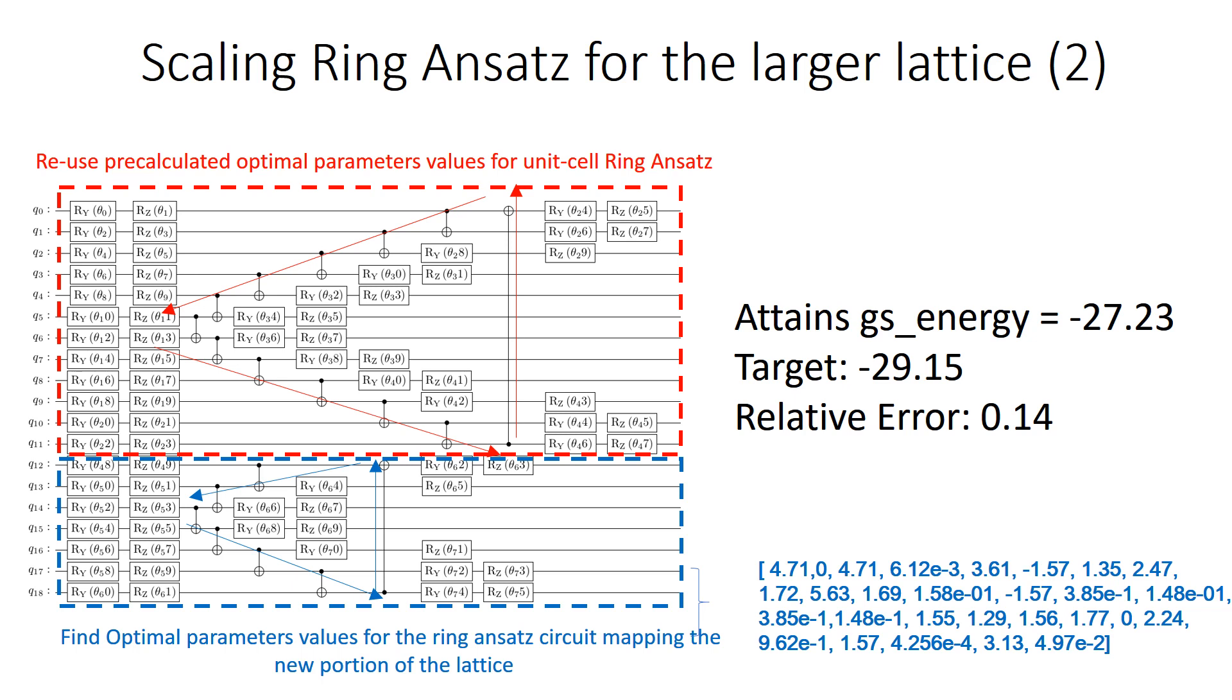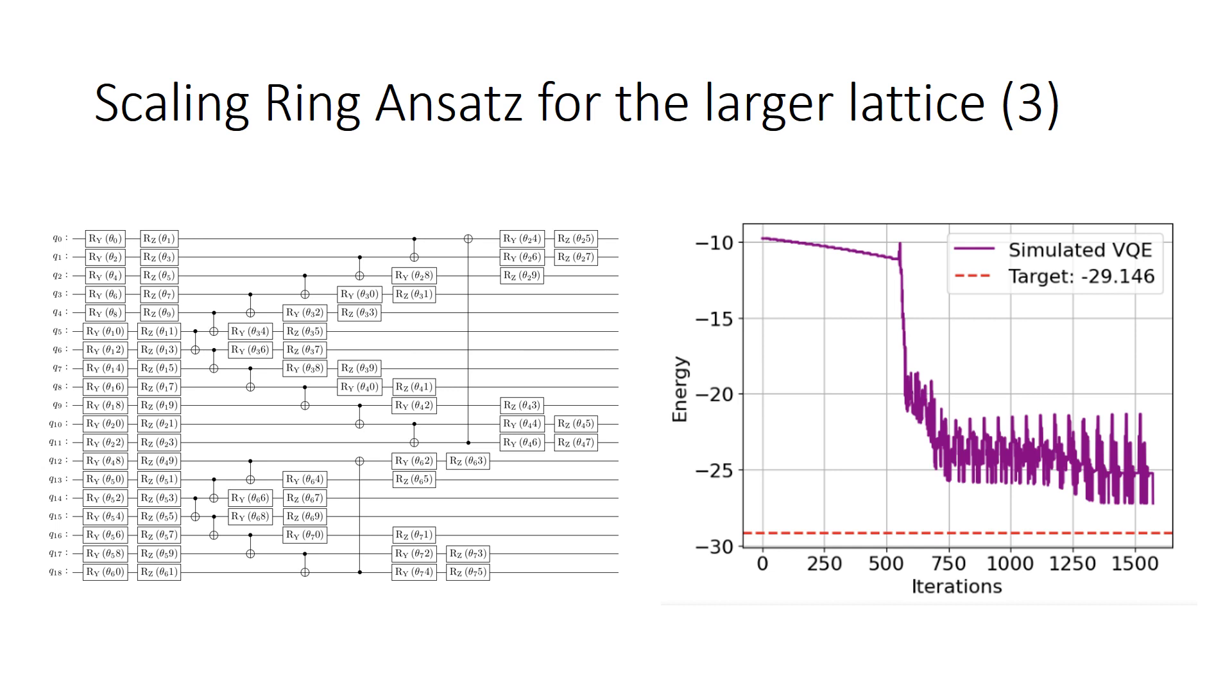As a result, I was able to attain the ground state energy minus 27.23, which is not too far away from the target value. However, the relative error is slightly higher, which I believe can be reduced to an acceptable limit as part of my future research work. The corresponding optimal parameter values of the lower half of the circuits are shown here. And here is the corresponding convergence plot as obtained by the simulated variational quantum eigensolver available in the Qiskit library.